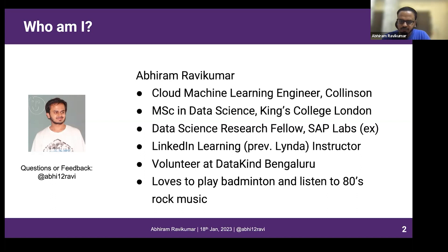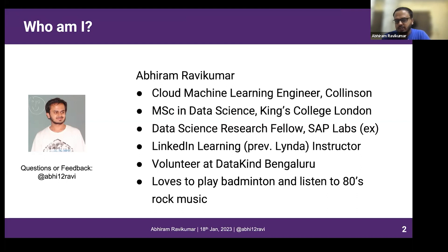Last year I completed my master's in data science from King's College in London. My thesis was an NLP project on Wikipedia protection articles. Basically, there are certain articles on Wikipedia that need protection when a vulnerable event is happening or when bots and trolls are trying to modify data. I built a detection mechanism to detect which Wikipedia pages would be vulnerable in the next 15 days and apply relevant protection mechanisms to avoid fake news and tampering with Wikipedia data.